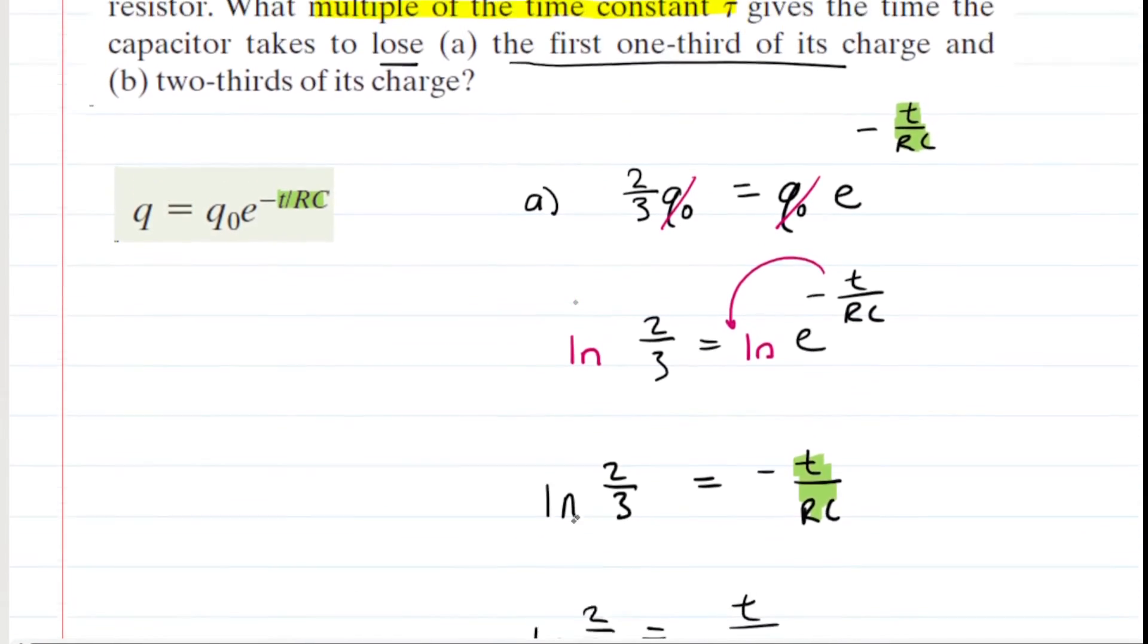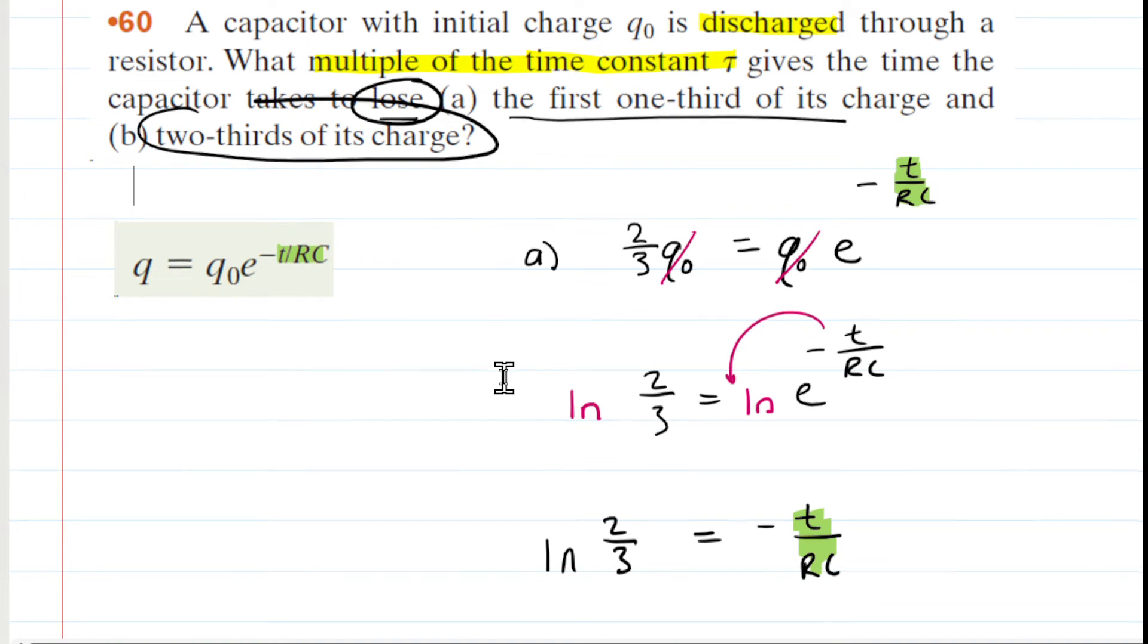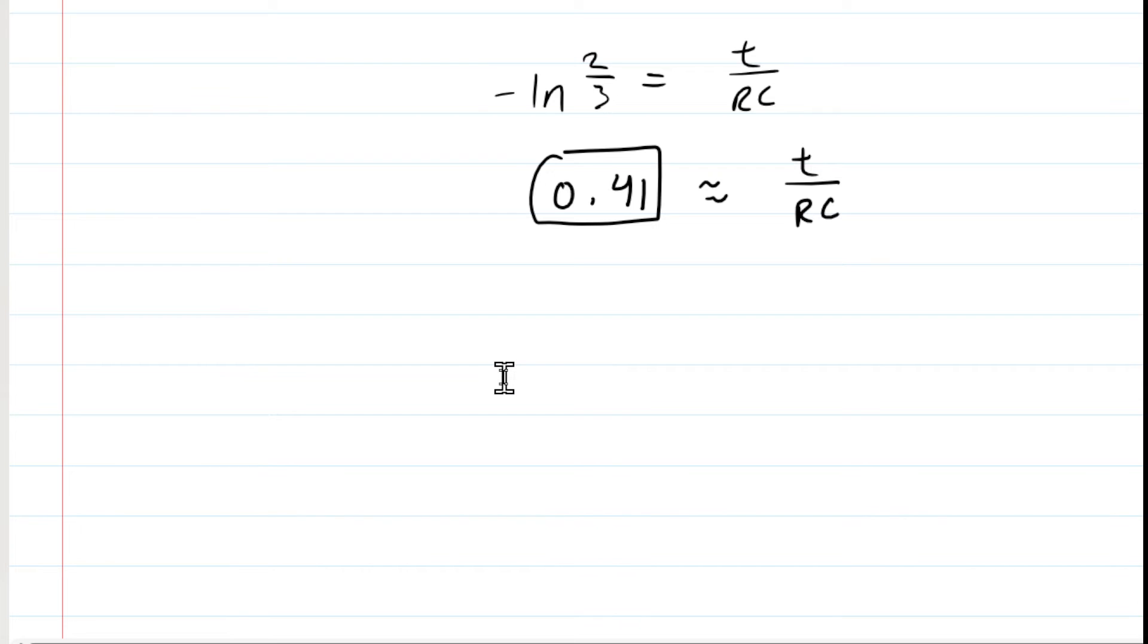In part B, we have to read the question very carefully again. This time, we're losing two-thirds of the charge. So if you're losing two-thirds of the charge, then the capacitor still has one-third of its initial charge. So we would have one-third of the initial charge equals the initial charge times the exponential term.